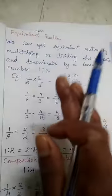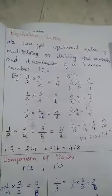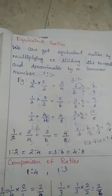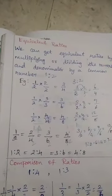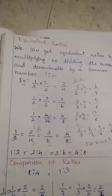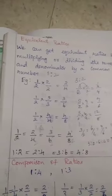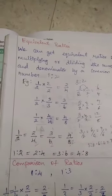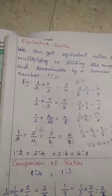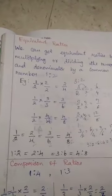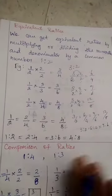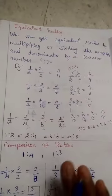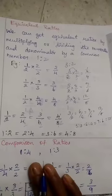To summarize: for equivalent ratios, multiply or divide the given ratio by the same number. For comparison of ratios, change to equivalent ratios with the same denominator, then compare the numerators to find which is greater than or less than. Okay children.